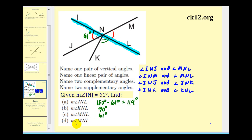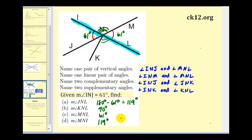The last angle is angle MNI. Angle MNI and angle LNM are supplementary, and since angle LNM is sixty-one degrees, angle MNI must be one hundred nineteen degrees. Notice that angle MNI and angle JNL are vertical angles and therefore equal — and we found the measure of angle JNL in part a.